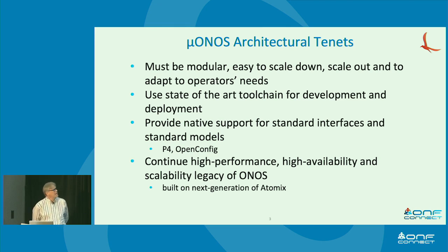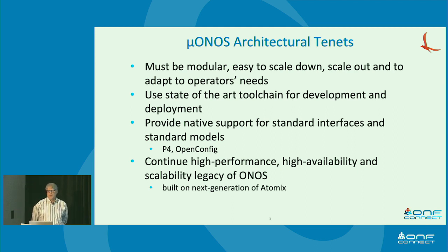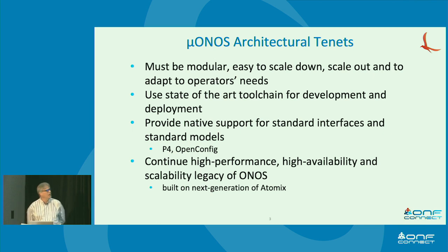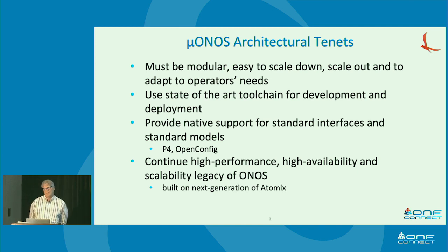The architectural tenants: we want to make it as modular as possible. We're trying to enforce that by using a microservices model, which is a good way to keep your interfaces clean. It allows you to do scale in and out using Kubernetes without having to worry about doing it yourself, which is a big advantage. We really want to adapt to different size deployment needs, which is something we have trouble with now — the existing ONOS comes out of the box very large and it's very difficult to make it small.